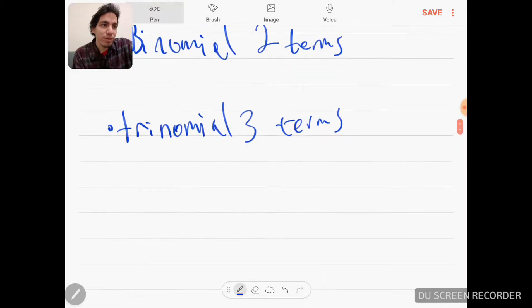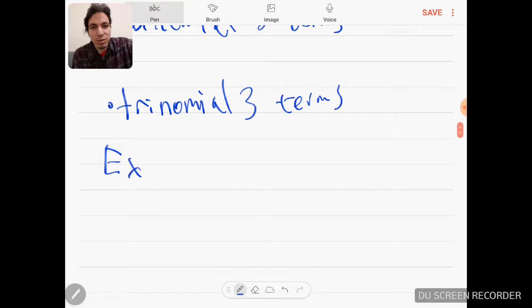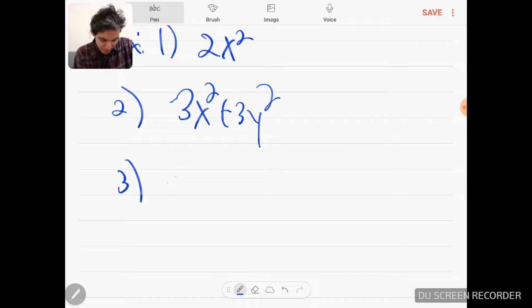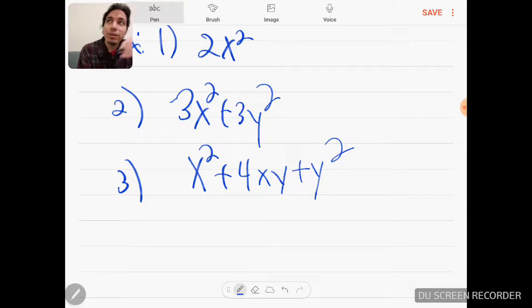I'm gonna give an example of each one. The first example could be 2x^2. This one's gonna be 3x^2 + 3y^2. And this is x^2 + 4xy + y^2. So in general, these are just basic examples of what a polynomial looks like.